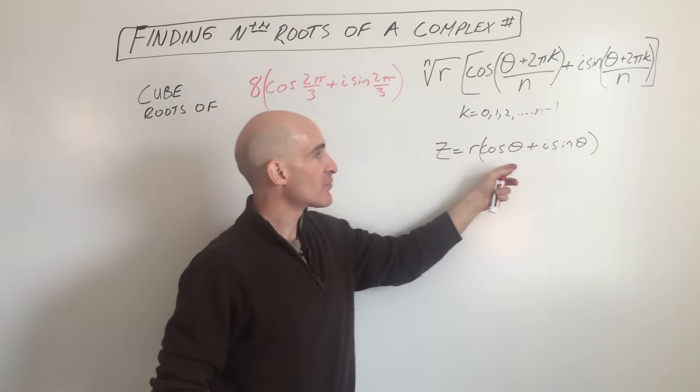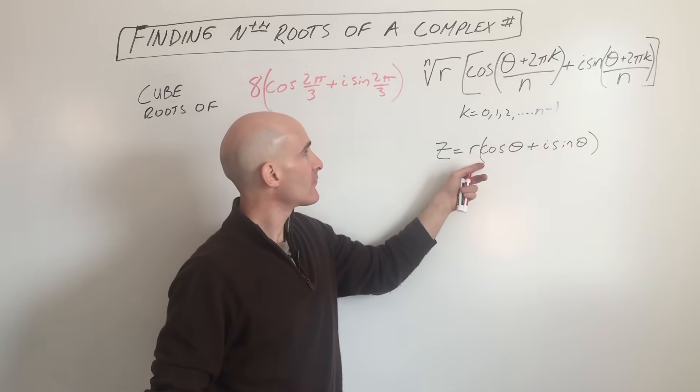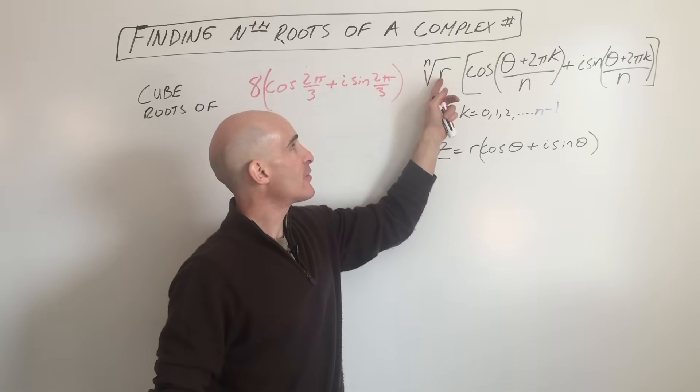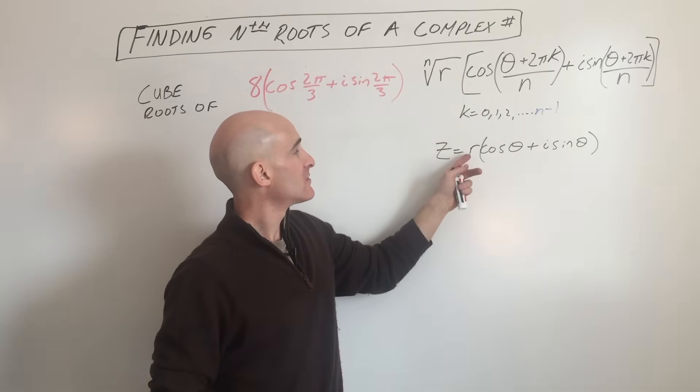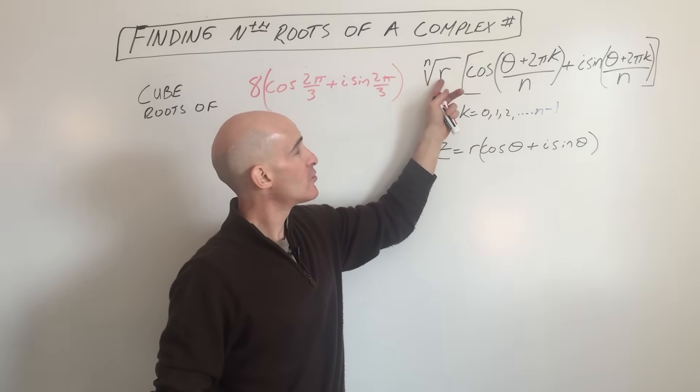So if you have a complex number in the trigonometric form like we have here, all you have to do is take the nth root of the r value. So if it's the cube root, this is going to be 3, the cube root.